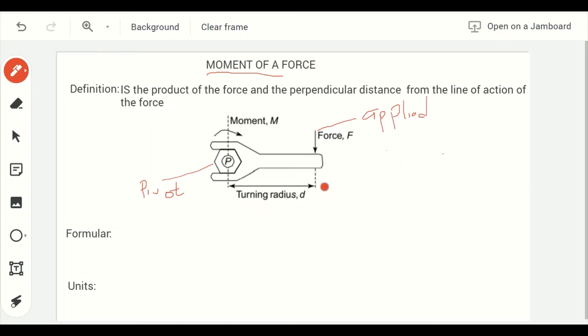The distance from the force to the pivot point is called a turning radius, which is d. So what you are seeing here is an application of moment of a force.